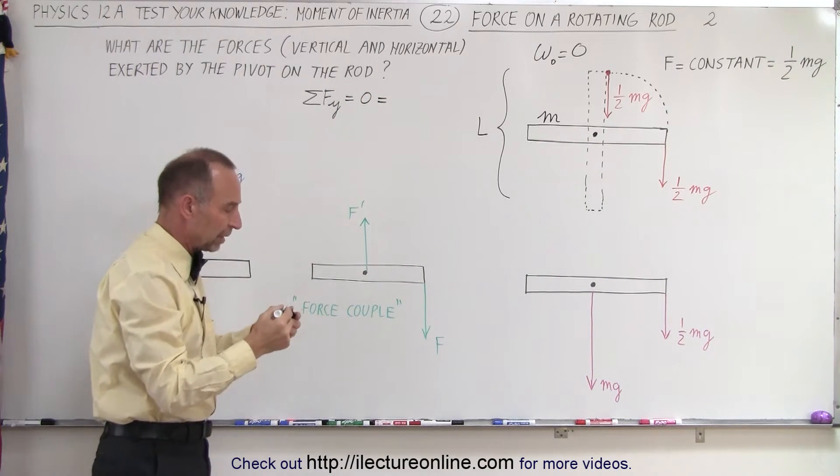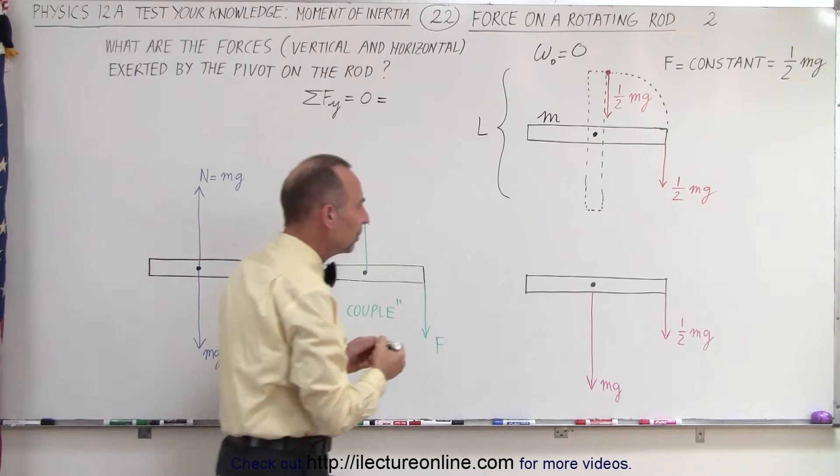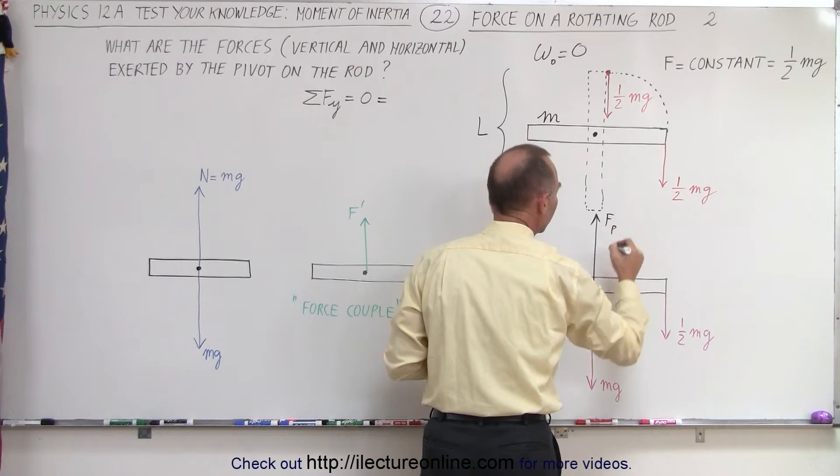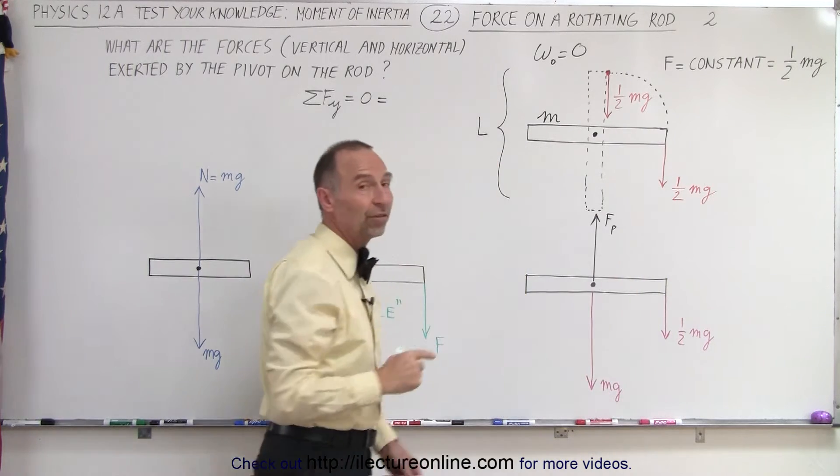They have to be in that particular case, and so we know there must be an opposing force in the opposite direction going upward. So, let's call that the force of the pivot, and all these three forces must add up to zero.